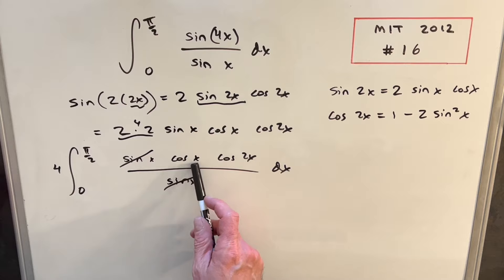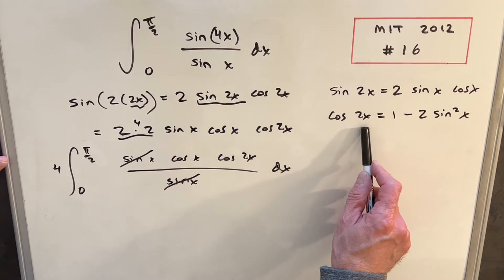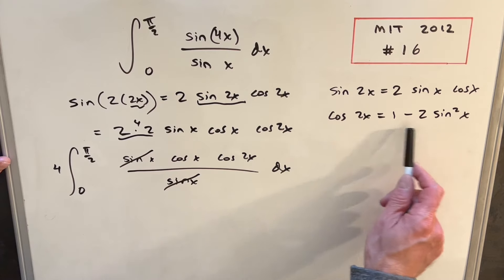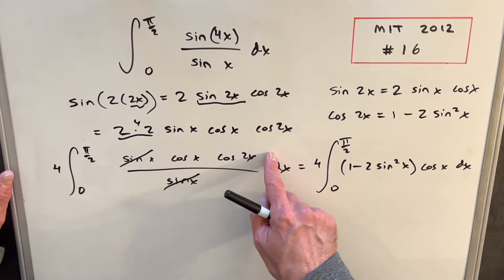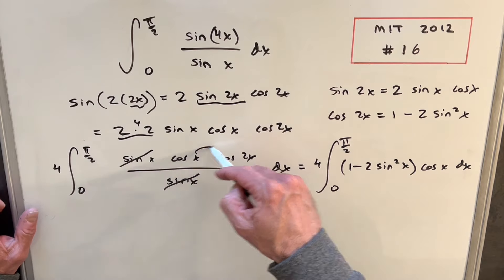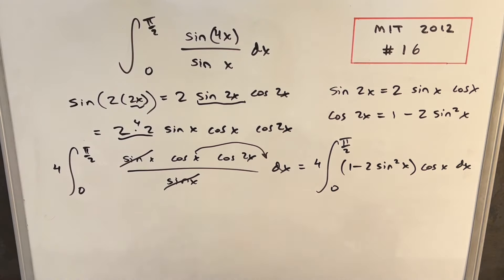And then before we integrate, we want to have everything in terms of x. Or I mean, it would work if we had this in terms of 2x, but let's use our cosine double angle formula over here, and we'll replace that cosine 2x with this. In rewriting it, the only thing I did is I reversed the order. I brought the cosine of x to the end and replaced the cosine 2x.